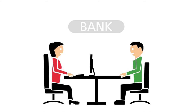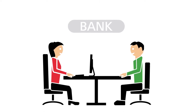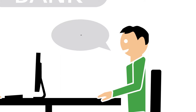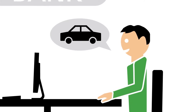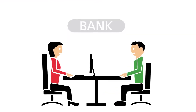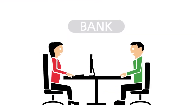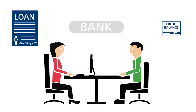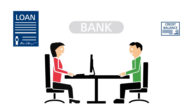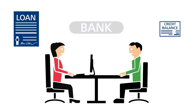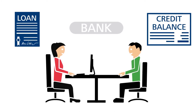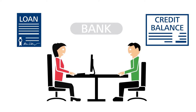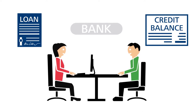The banks create new book money when they grant loans. For example, Mr. Müller needs a loan to buy a car. He negotiates this with the bank's loan officer. The bank grants a loan to Mr. Müller, and the loan amount is credited to his account — his credit balance increases. The bank has created new book money without needing to raise any savings deposits first.